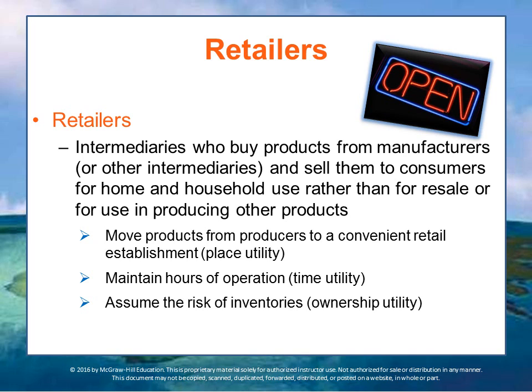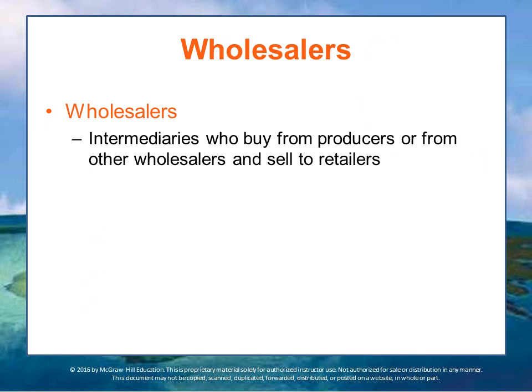Retailers provide these various utilities to the customer, and for that they are paid. They make their profits in the difference between the wholesale price — the price sold from manufacturers to them — and the retail price sold to consumers. Wholesalers are also in the chain. They are intermediaries who buy from producers or from other wholesalers and sell to retailers. They usually do not sell in significant quantities to the ultimate consumers; rather, they sell generally to retailers who then sell to consumers.